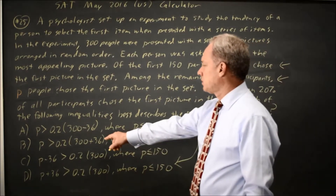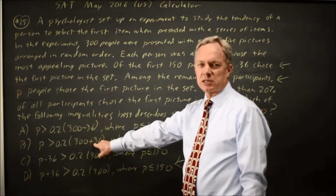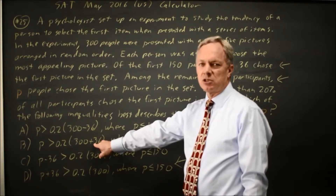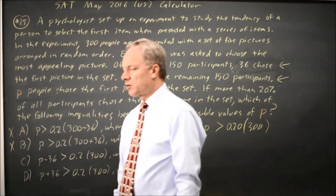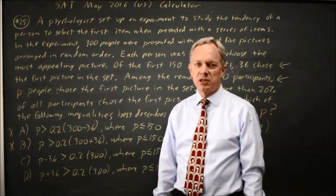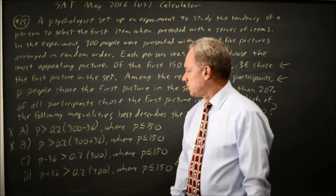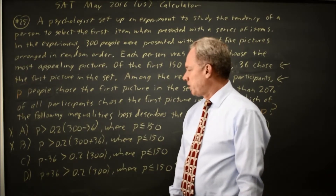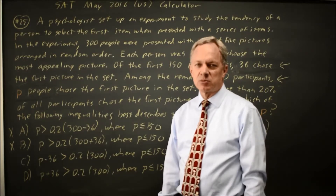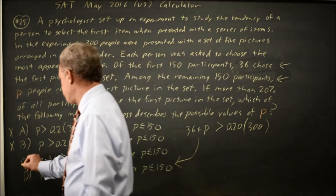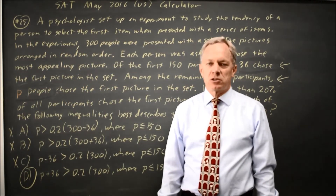In choice A, they're subtracting 36, or adding 36 in B, to the 300 total number of participants. But 36 is the number who chose the first picture, so you should not be taking it from total participants — you should be combining it with P, the number in the second group. Choice C would have P by itself being more than 20% of all participants. So choice C is also not correct. D is the only one that matches their description of the problem.